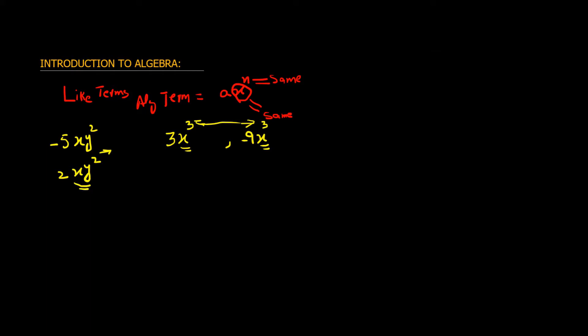Only the y part of the base has an exponent. If we compare these two terms, let us compare this with another term, which is minus 7x square y. Now the base is same, but exponent is not, because in this case x has an exponent of 2, while in this case y has an exponent of 2. So not only the base should be the same, but also the exponent should be the same.